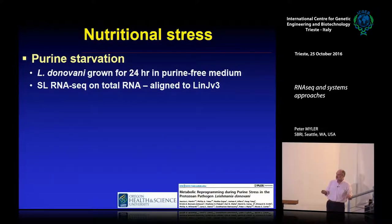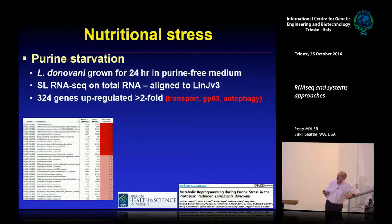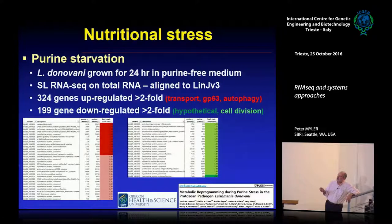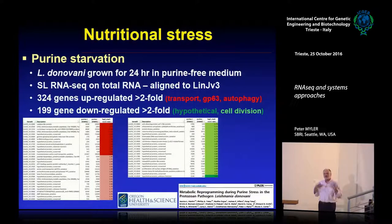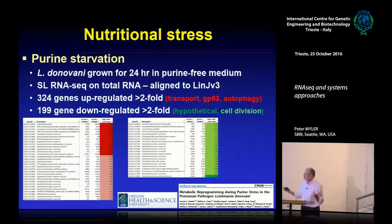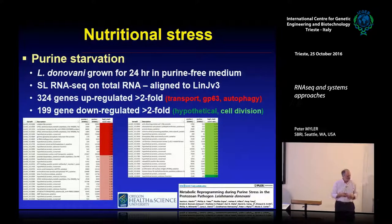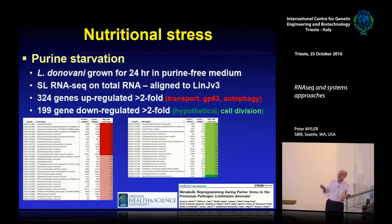For purine starvation, growing L. donovani in purine-free medium compared to purine-containing medium, we found 300 genes upregulated by 2-fold — though we only made one library so some may be noise. Again, transport, autophagy, and some GP63 genes were upregulated. About 200 genes were downregulated, mostly hypotheticals plus some cell division genes, which makes sense: with no purines you can't replicate DNA, so you probably won't divide. The parasite must have a sensor detecting purine depletion and regulating RNA accordingly.